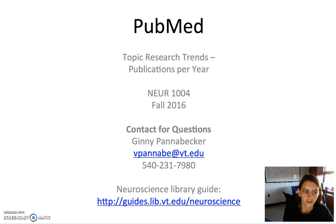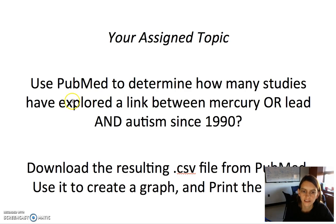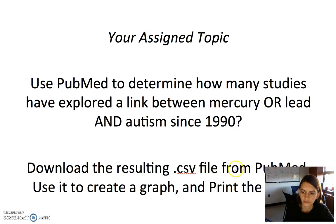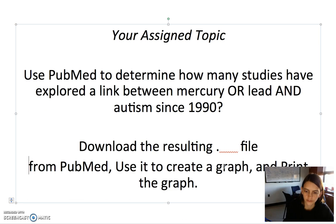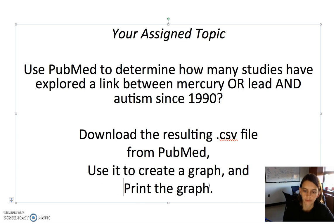Your assigned topic is to do the same kind of thing, but look at how many studies have explored a link between mercury or lead and autism since 1990. You also want to download the resulting CSV file from PubMed, use it to create a graph, and print the graph.